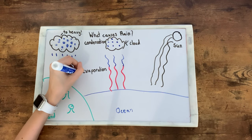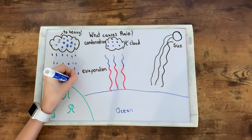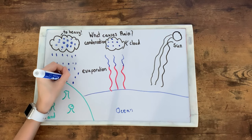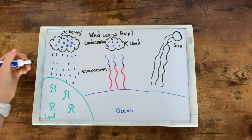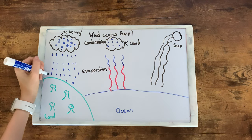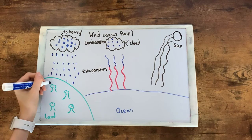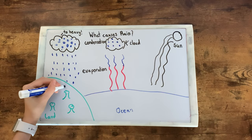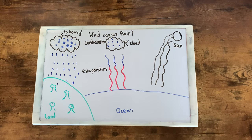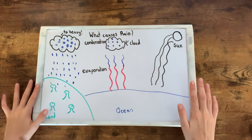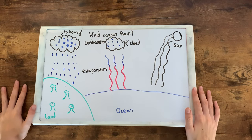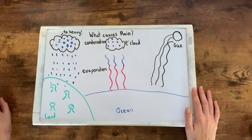Raindrops fall down on the ground surface, where the sun can shine on them, and this whole cycle happens again. This is called the water cycle. The water cycle keeps the water moving from the ground to the sky and providing water needed for plants, animals, and people to survive. And that's it for today! Bye!